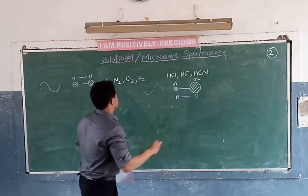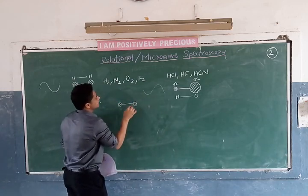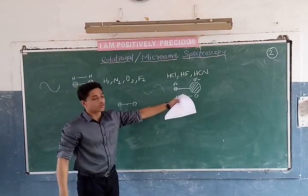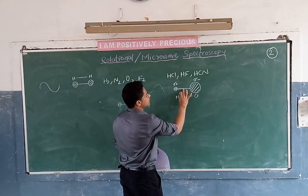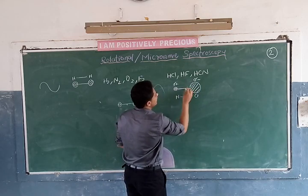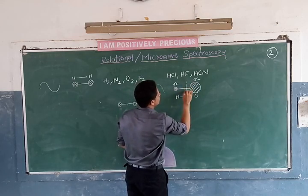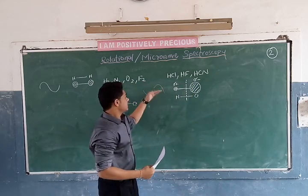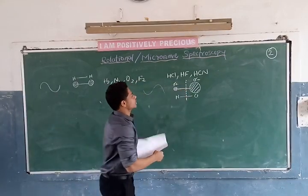Further explaining: if both atoms have the same mass, say H2, the center of gravity lies between the center. But for heterogeneous molecules, the center of gravity will not be in the center. The center of gravity will shift towards the larger atom, so that the mass is balanced. The center of gravity will shift towards the larger mass atom.